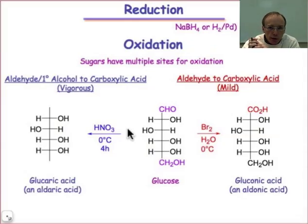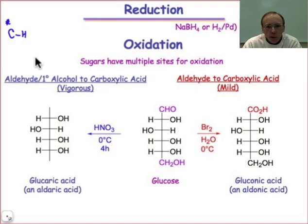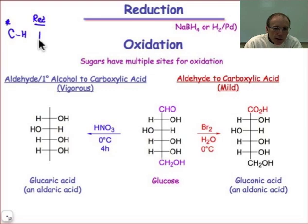In this webcast, we're going to look at some more reactions of monosaccharides, beginning with oxidation and reduction processes. I'm not going to have you focus on the mechanism of these reactions, but rather I'd like you to be able to identify whether there's been an oxidation or a reduction reaction taking place at a particular carbon atom. In a reduction process, the number of carbon-hydrogen bonds is going to increase, and in an oxidation process, the number of carbon-hydrogen bonds is going to decrease.